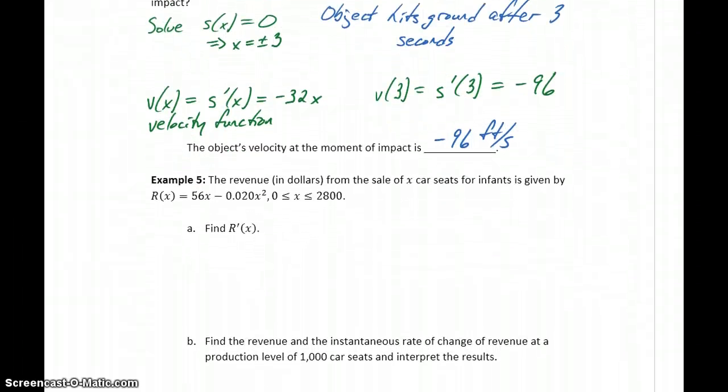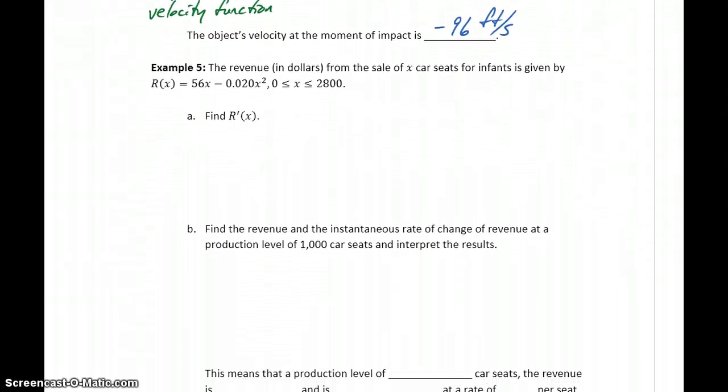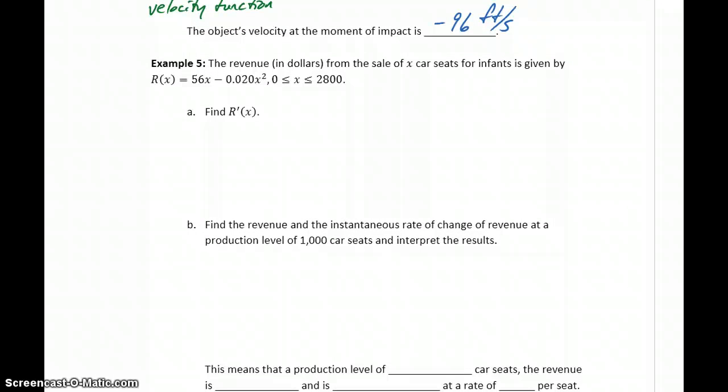Rather than, in these videos, go back and forth between Wolfram Alpha and these different examples, I'll assume you worked through those first three examples, you know how to find the derivative and then evaluate the function for those different results. What we'll look at here are just the results that you should be getting. In example five, the revenue in dollars from the sale of x car seats for infants is given by this revenue function r of x. What we want to do is find r prime of x. We would use Wolfram Alpha, ask it to find the derivative of this expression, which should give you a result of 56 minus 0.04x.